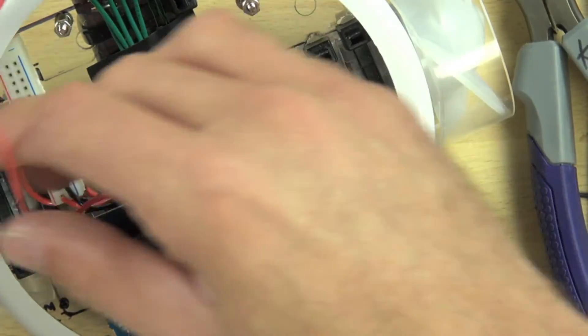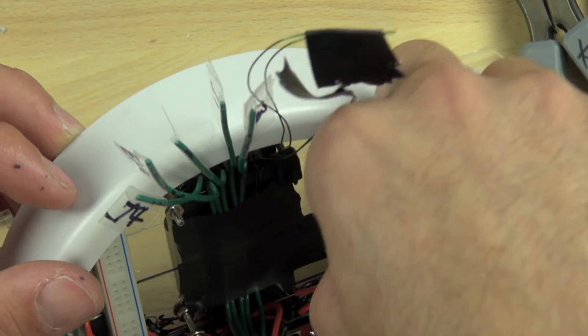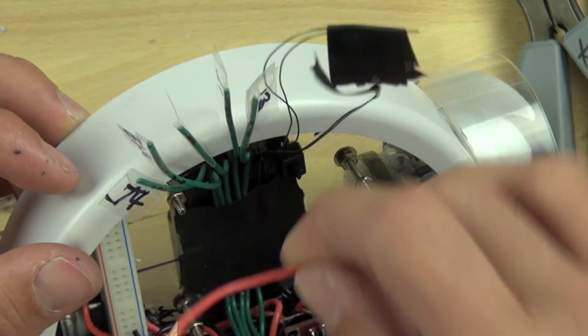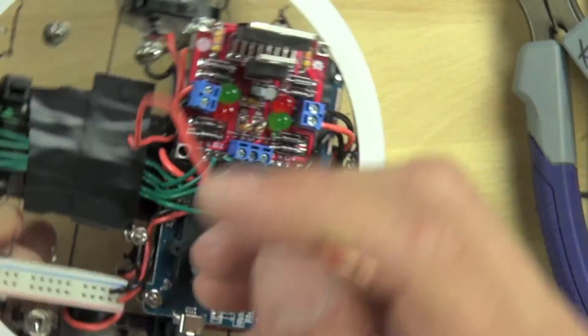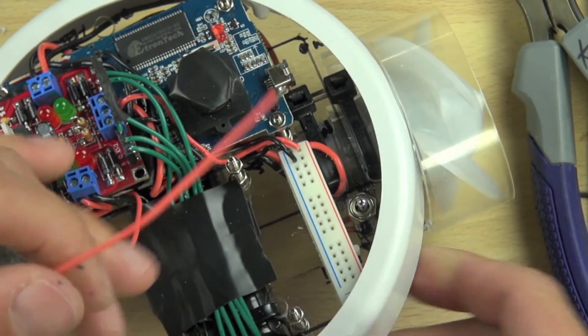And this is the positive wire from the battery, and I think what we're going to do for this is we'll try and snake it underneath everything just to get it out of the way. It looks like it might be the most efficient way to get it back there, so it's a bit like threading a needle.